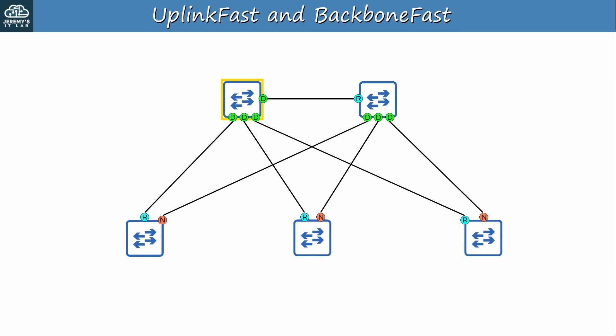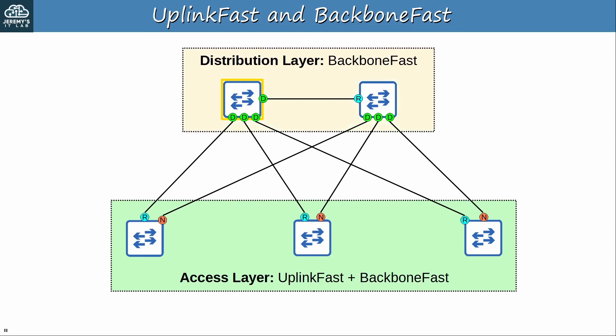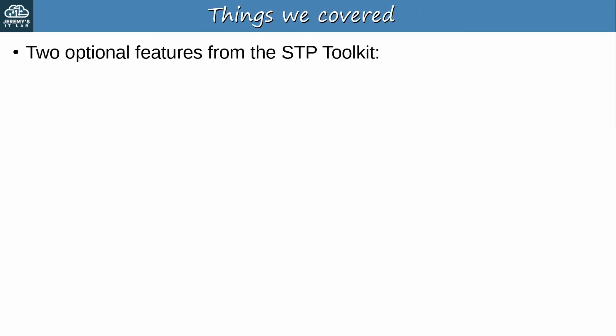For review, here's a sample LAN with an access and distribution layer. At the access layer, where switches are expected to have non-designated ports, you should implement both UplinkFast and BackboneFast. Remember, UplinkFast is only necessary on switches that have non-designated ports. At the distribution layer, UplinkFast is not necessary — neither of these switches should be blocking any ports. However, for BackboneFast to work it should be configured on all switches, so that includes the distribution layer switches too.